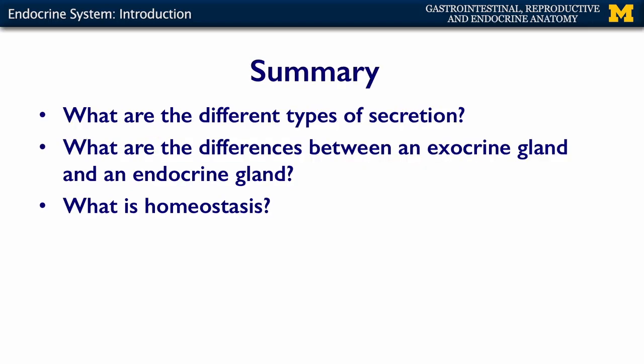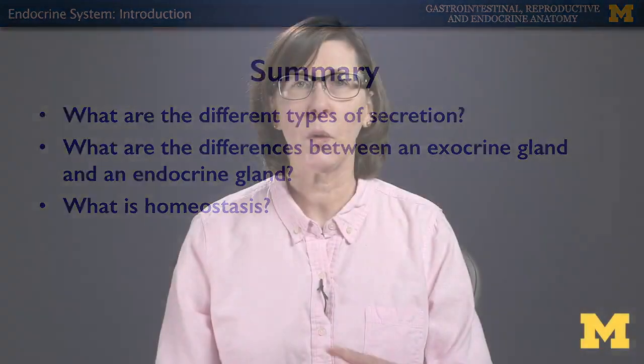To summarize: what you need to know for the assessment is the different types of secretion — think ducts versus no ducts, think about the individual cell, and whether action is local or at a distance. Know the big differences between exocrine glands and endocrine glands, and be able to define homeostasis. Once you have all of these concepts in your head, you'll be ready for the assessment.